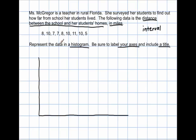Let's take a look at the data itself. Our smallest number is 5 — that's the number of miles — and our largest number is 11. I need to think about how to group this data in intervals. I could do 5 to 6, 7 to 8, 9 to 10, and 11 to 12. So 5 to 6, 7 to 8, 9 to 10, and 11 to 12 make four different intervals.